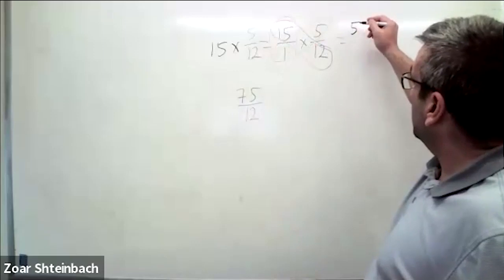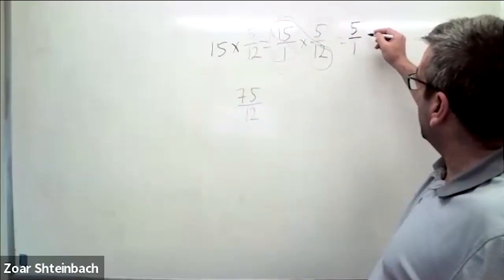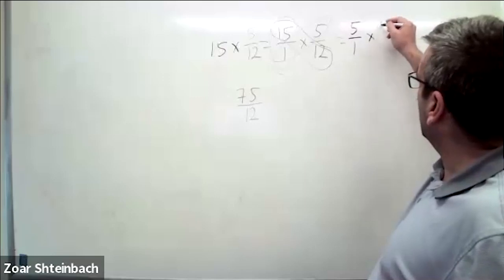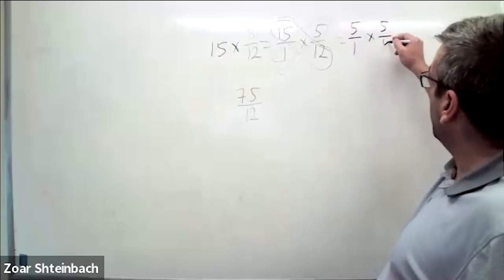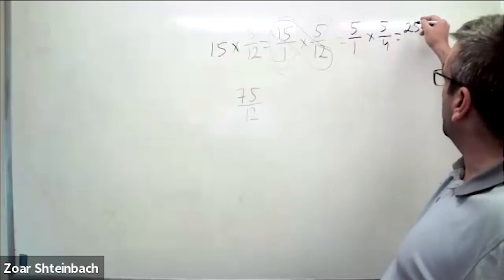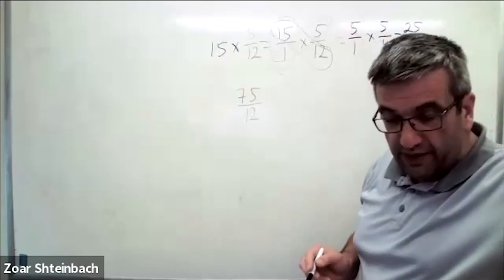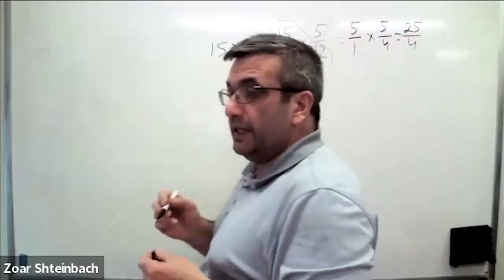Which is 5 over 4. It will be 5 over 1 here, and here we'll have 5 over 4. You multiply and you get 25 over 4. You got the correct answer, but here you deal with smaller numbers.